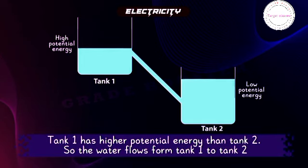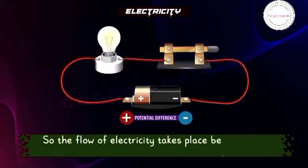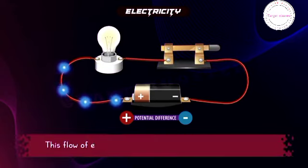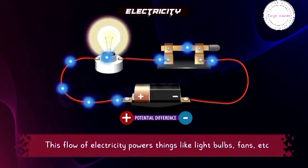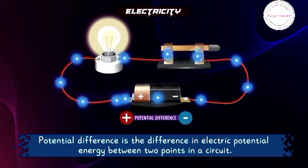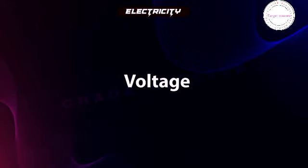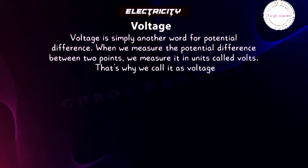In the same way, a potential difference exists between the positive and negative poles of a cell, so the flow of electricity takes place from one pole to another, powering things like light bulbs and fans. Potential difference is the difference in the electric potential energy between two points in a circuit. Voltage is simply another word for potential difference. When we measure the potential difference between two points, we measure it in units called volts — that is why we call it voltage.